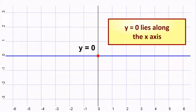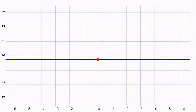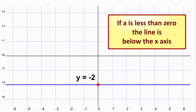Y equals 0 lies along the X axis. If A is less than 0, the line is below the X axis.